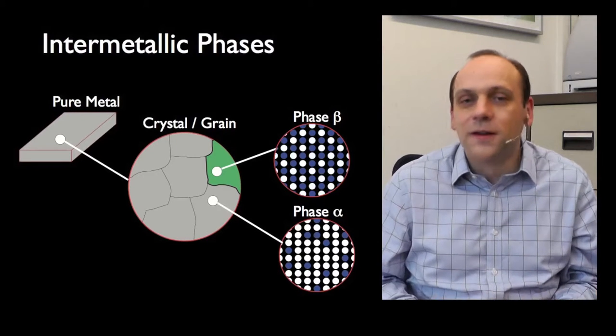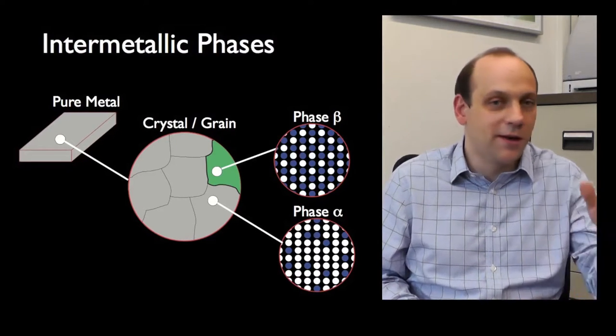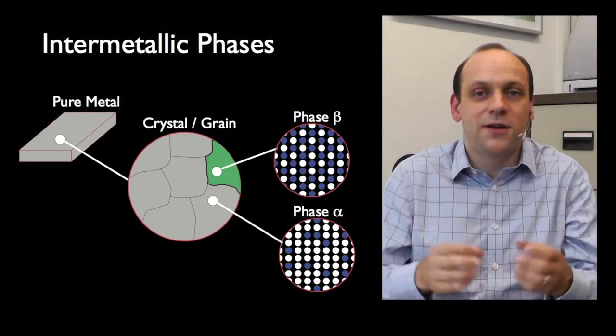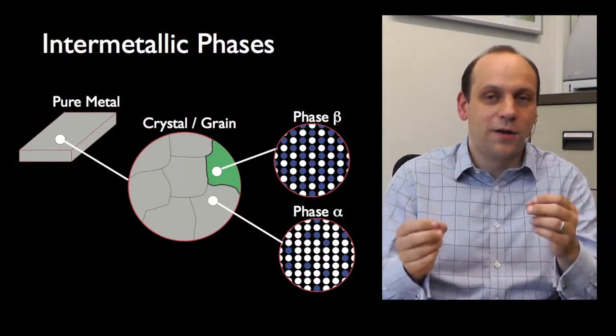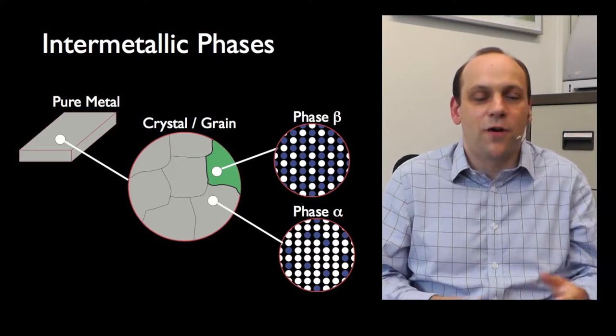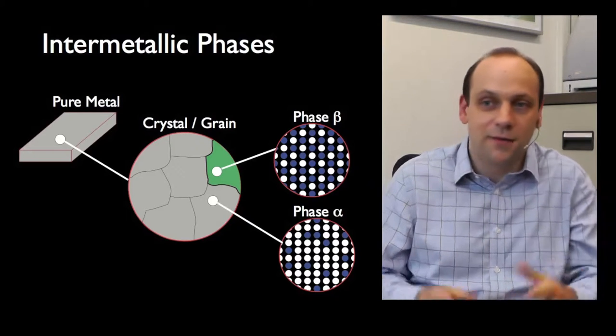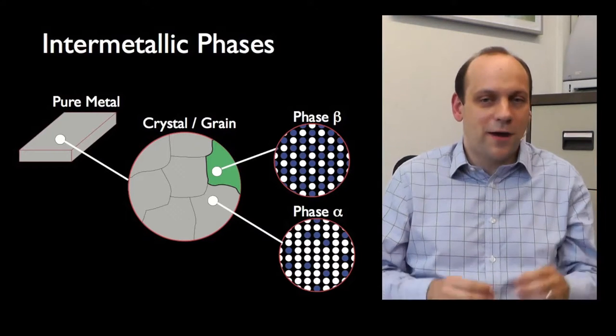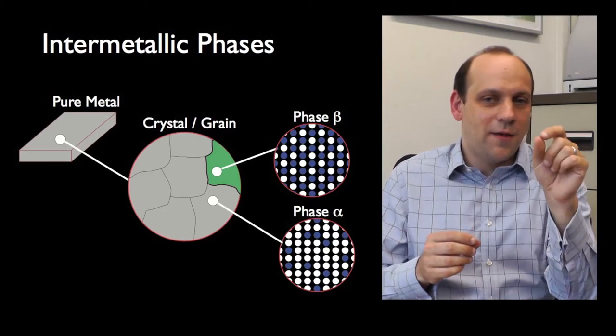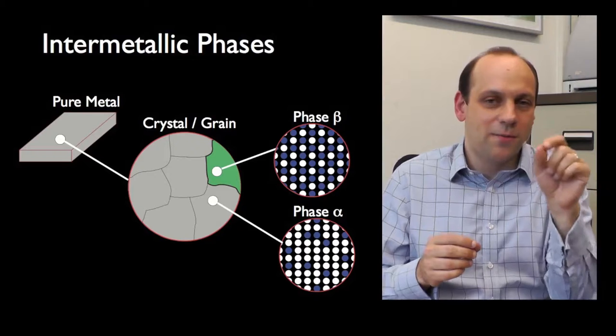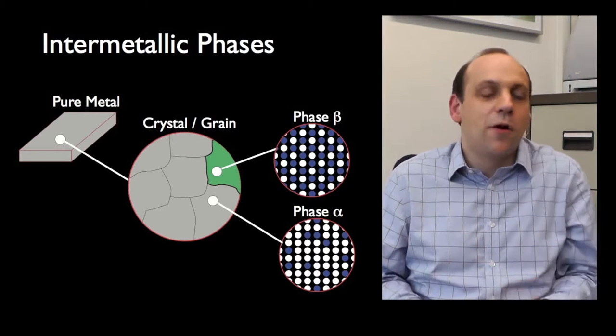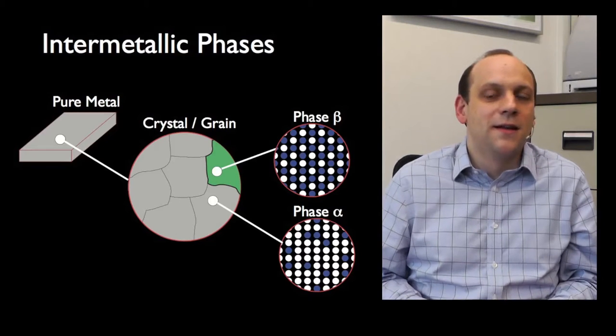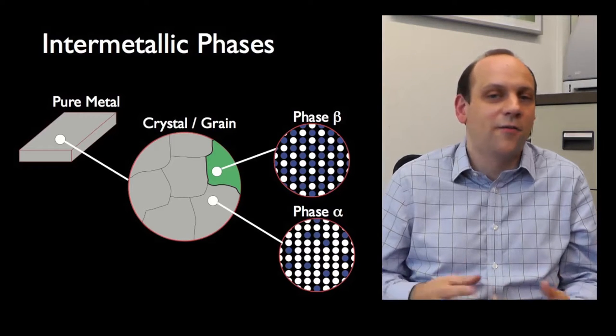A third option: rather than having phase beta predominantly B, we could have a 50-50 mixture of white and blue atoms. If white was aluminum and blue was copper, that would be an AlCu compound where the atoms are bonded to each other but you never had blue-blue pairs. That's called an intermetallic phase, that phase beta. It's still a two-phase material consisting of alpha and beta phases.